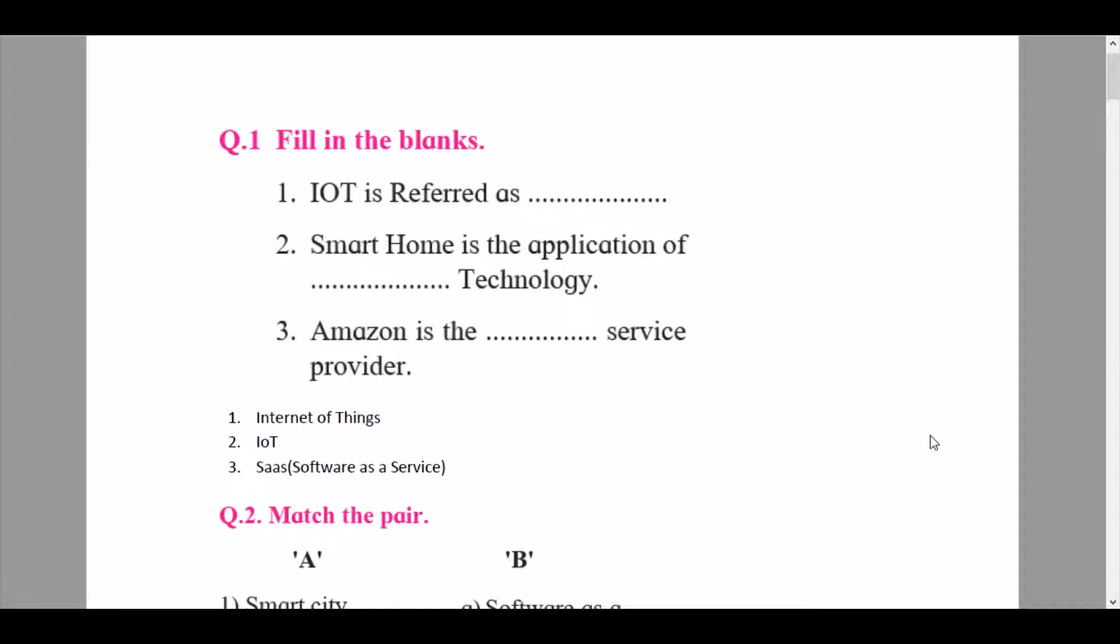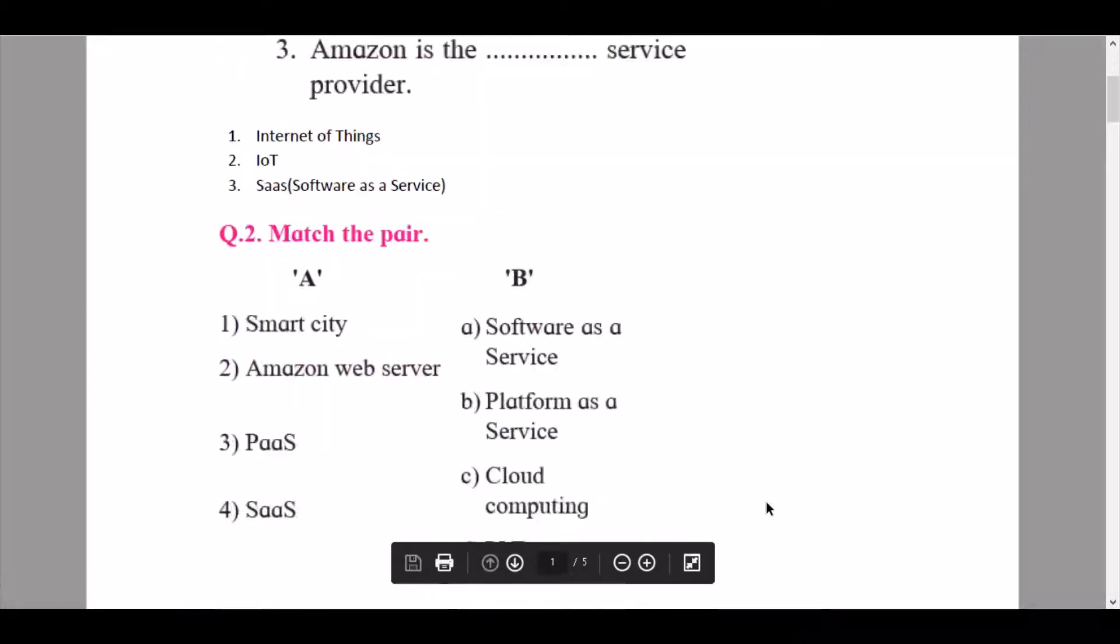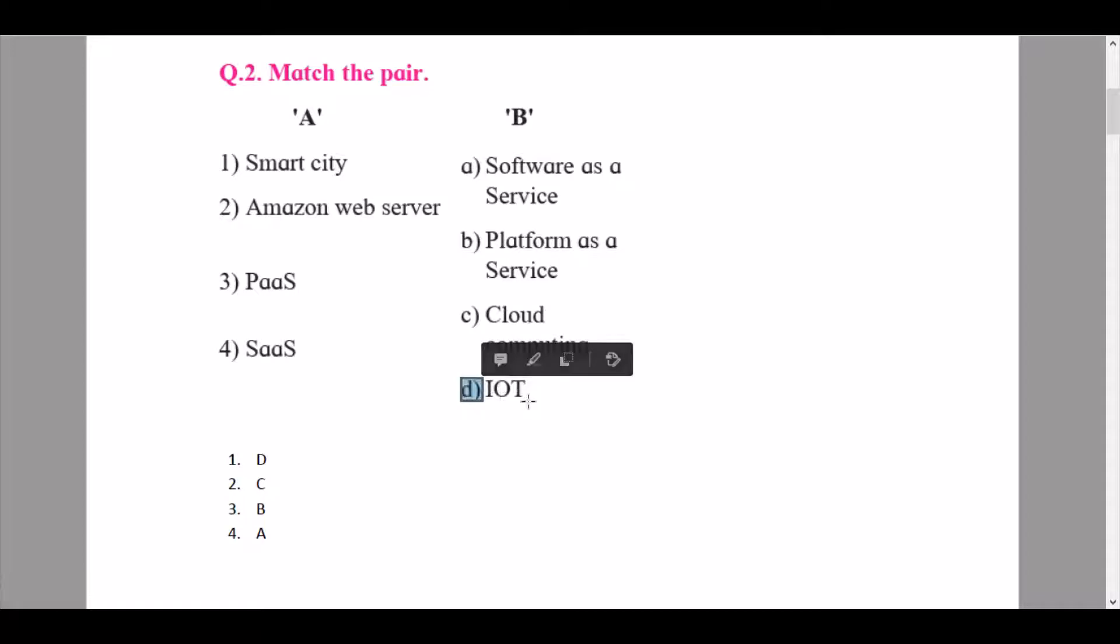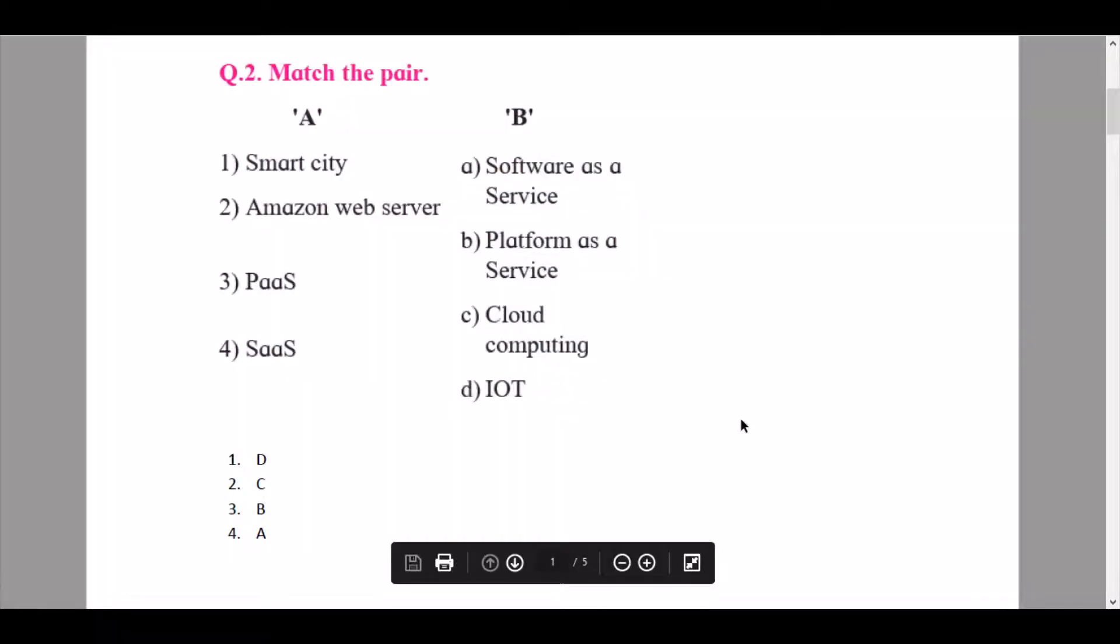Here we continue to the second part, that is match the pair. Question number two, match the pair. Two columns have been given, we just need to match up the numerical part to the alphabetical part. First part, Smart city, matches up with option D, that is IoT. Then we have Amazon web server as the second part of column A, that matches up with C, cloud computing. Then we have PaaS, this matches up with A, platform as a service. And lastly, SaaS on the fourth part, that matches up with software as a service.